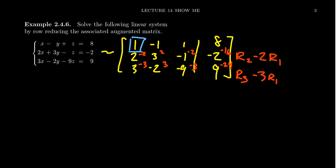We're going to copy down our matrix, applying these changes. The first row isn't going to change: 1, -1, 1, 8. For the second row, 2 minus 2 is 0. 3 plus 2 is 5. -1 minus 2 is -3. -2 minus 16 is -18. For the third row, 3 minus 3 is 0. -2 plus 3 is 1. -9 minus 3 is -12. And 9 minus 24 gives -15.